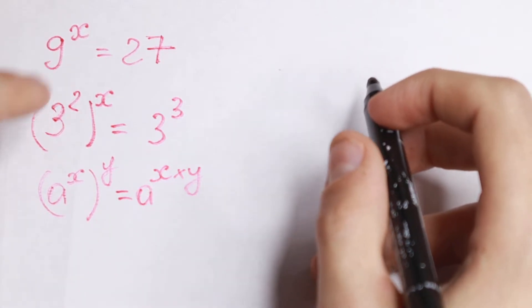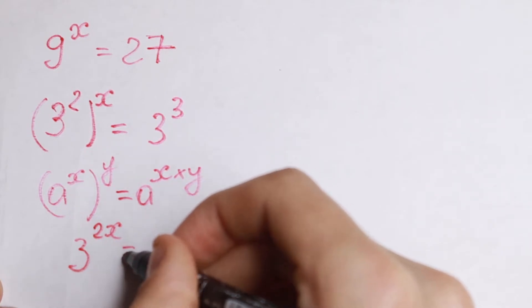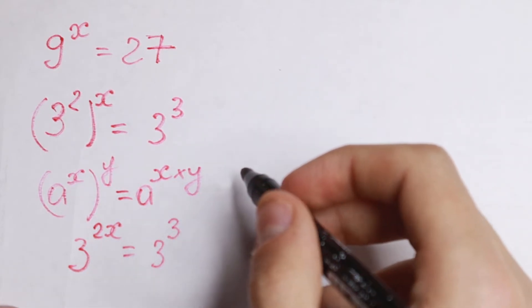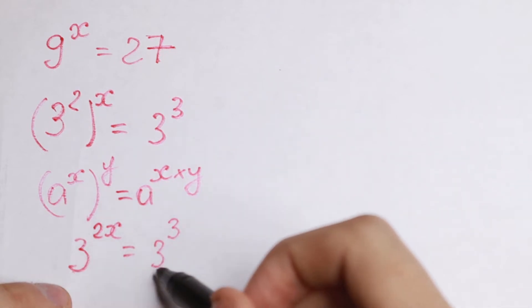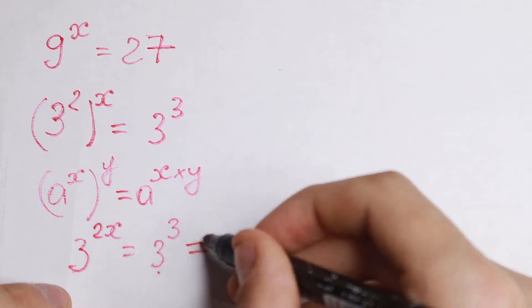So we can do this in our case. We will have 3 to the power 2x equal to 3 cube. This is a classic case because we have same base and we need to write an equation with our powers, with our exponents.